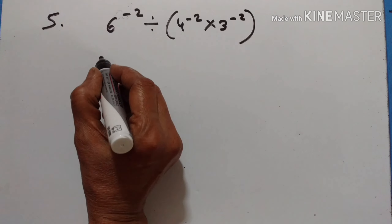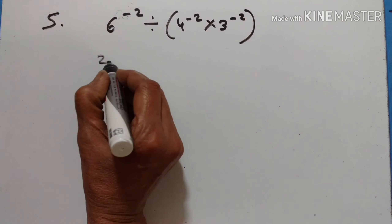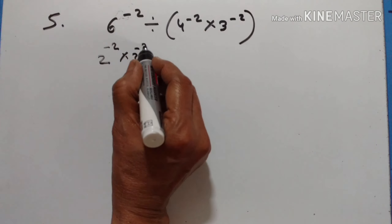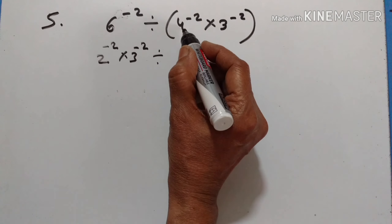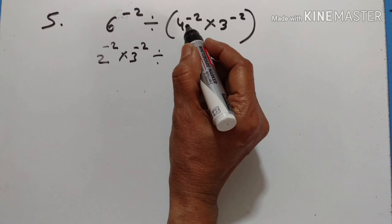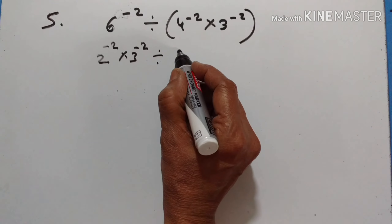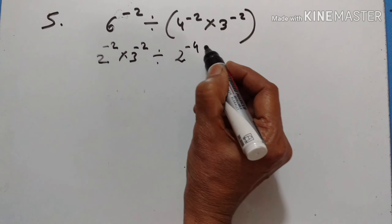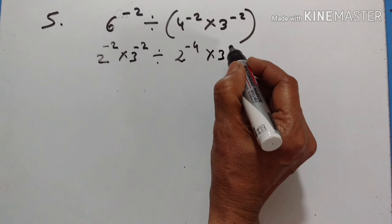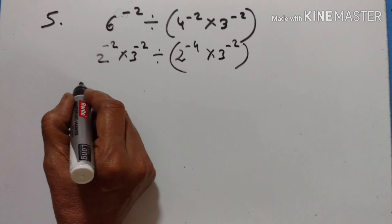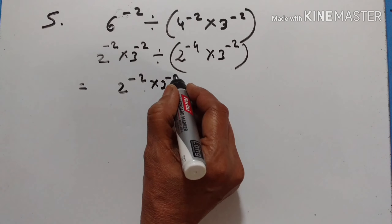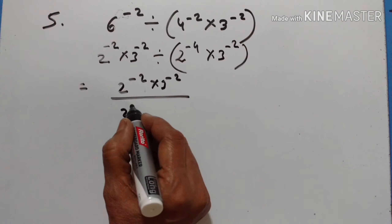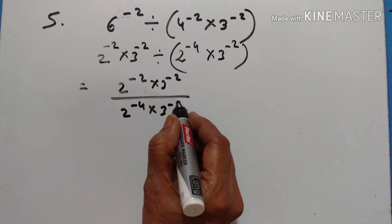Let us split this into 2 and 3. 6 into 2 and 3: 2 raised to the power of minus 2 into 3 raised to the power of minus 2, divided by 4, which is equal to 2 raised to the power of 2. So 2 into minus 2: 2 raised to the power of minus 4, into 3 raised to the power of minus 2. This is equal to 2 raised to the power of minus 2 into 3 raised to the power of minus 2, divided by 2 raised to the power of minus 4 into 3 raised to the power of minus 2.